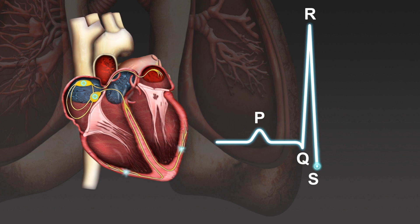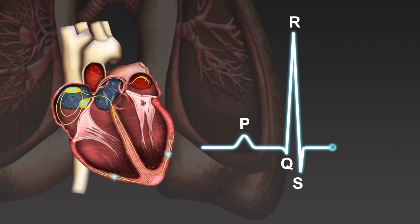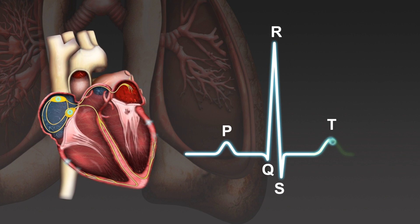The impulse remains unchanged for a moment as the ventricles remain depolarised. This gives rise to another flat section, called the ST segment. As the impulse fades away and the ventricles repolarise, the T wave is formed.